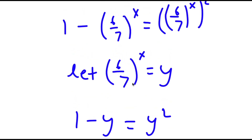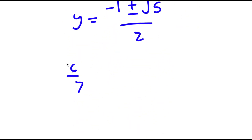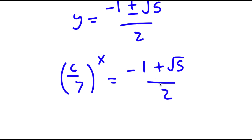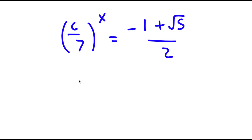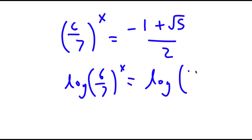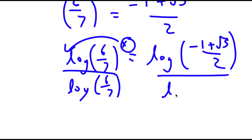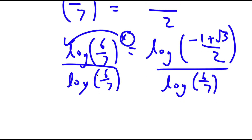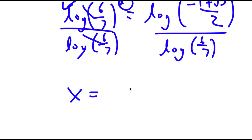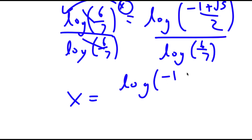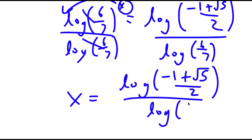Now remember how we let 6 over 7 to the power of x equal y. So now I have 6 over 7 to the power of x equal to negative 1 plus the square root of 5 over 2. I'm going to take the log on both sides, so I have log of 6 over 7 to the power of x is equal to log of negative 1 plus the square root of 5 over 2. I can move x to the front and divide both sides by log 6 over 7, giving x is equal to log of (negative 1 plus the square root of 5 over 2) over log of 6 over 7.